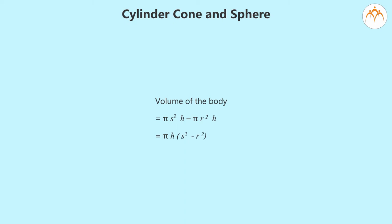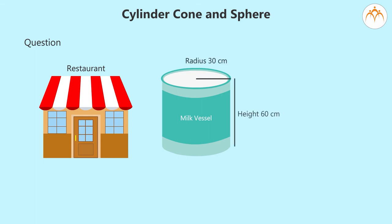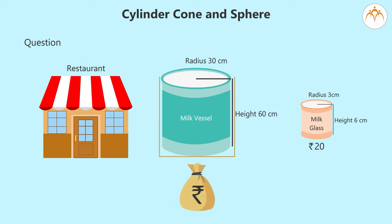Let us solve a simple example. Question: A restaurant has a large cylindrical vessel of base radius 30 cm filled to a height of 60 cm with milk. The milk is served in small cylindrical glasses of radius 3 cm and height 6 cm. Each glass is sold for Rs 20. How much money does the restaurant earn from serving the milk from this vessel?